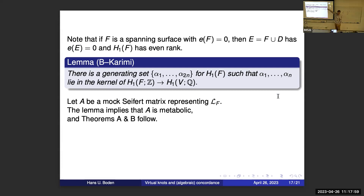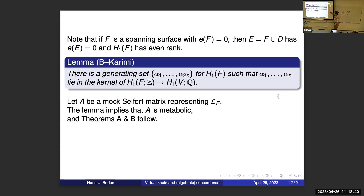The lemma we need for translating this geometric result into the algebraic statement — that the mock Seifert matrix is metabolic — says that when your surface E is the boundary of a three-manifold D, you can find a half-dimensional set of generators that all lie in the kernel of the map from H₁ of the spanning surface to H₁ of the three-manifold. This is the usual half-dimensional argument in the context of non-orientable surfaces. That's how you see that if the knot is slice, then it has a metabolic mock Seifert matrix.